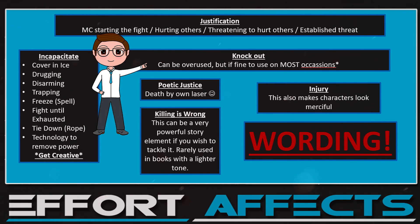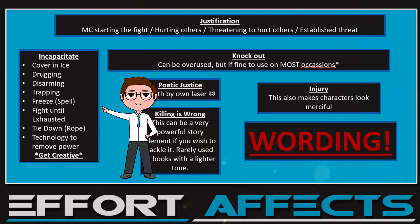Technique number one: knockouts. This is one we all know and love. Knockouts are a shortcut to both taking the enemy out and allowing your characters to keep the moral high ground. Just be cautious not to fall into the common trap of using it too often. I've read books where basically every enemy is knocked out — it becomes repetitive and stale very quickly.